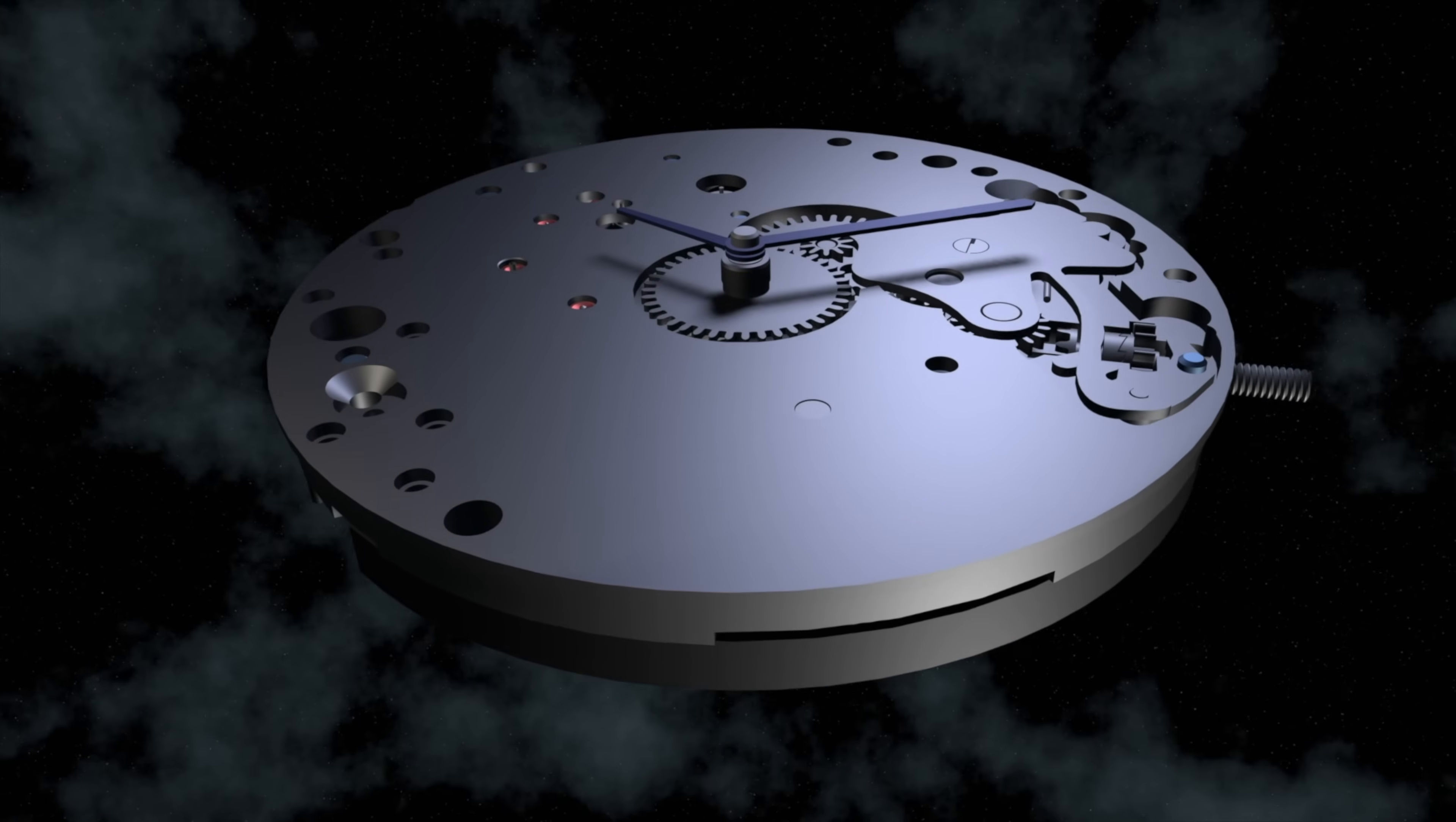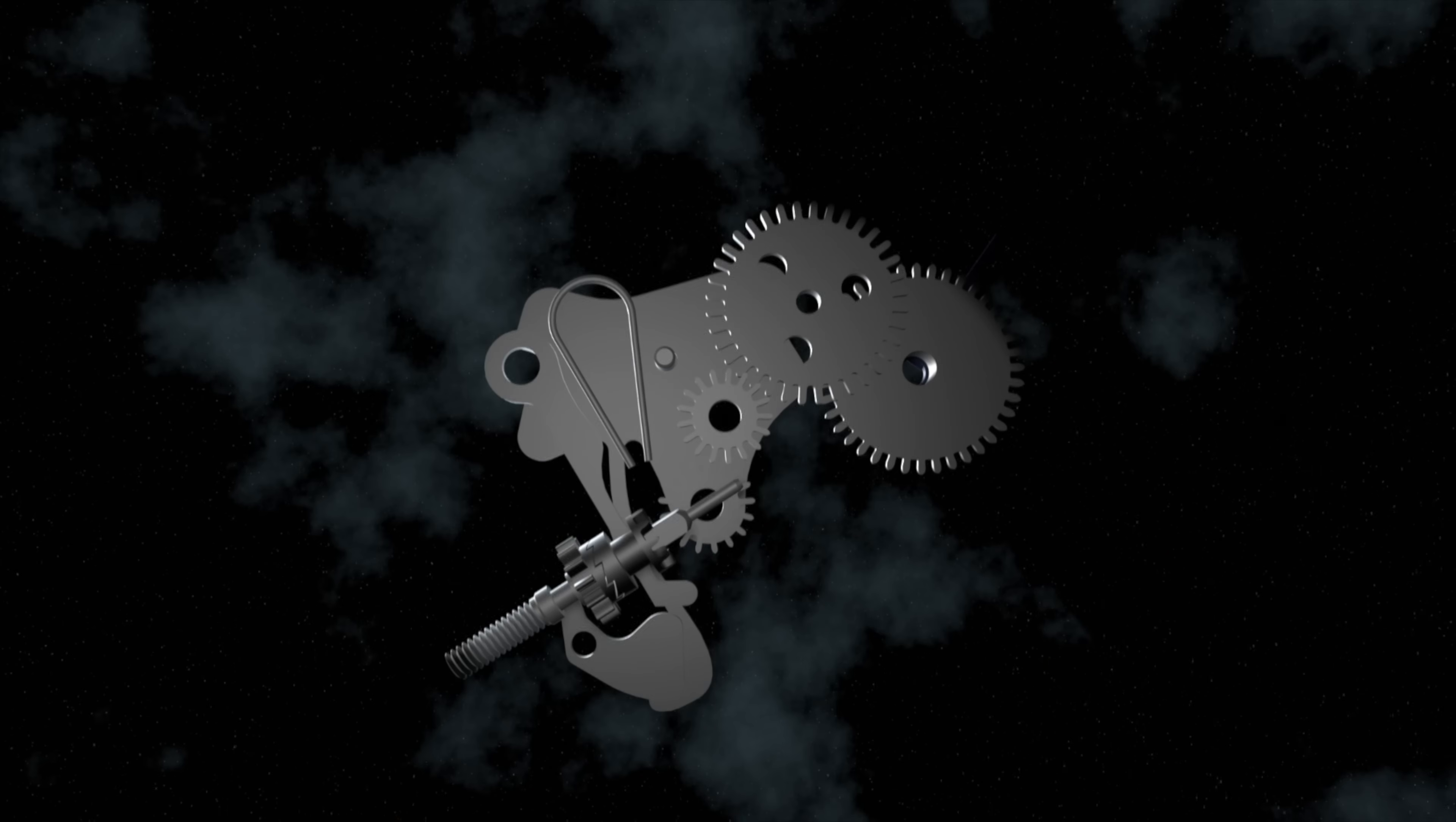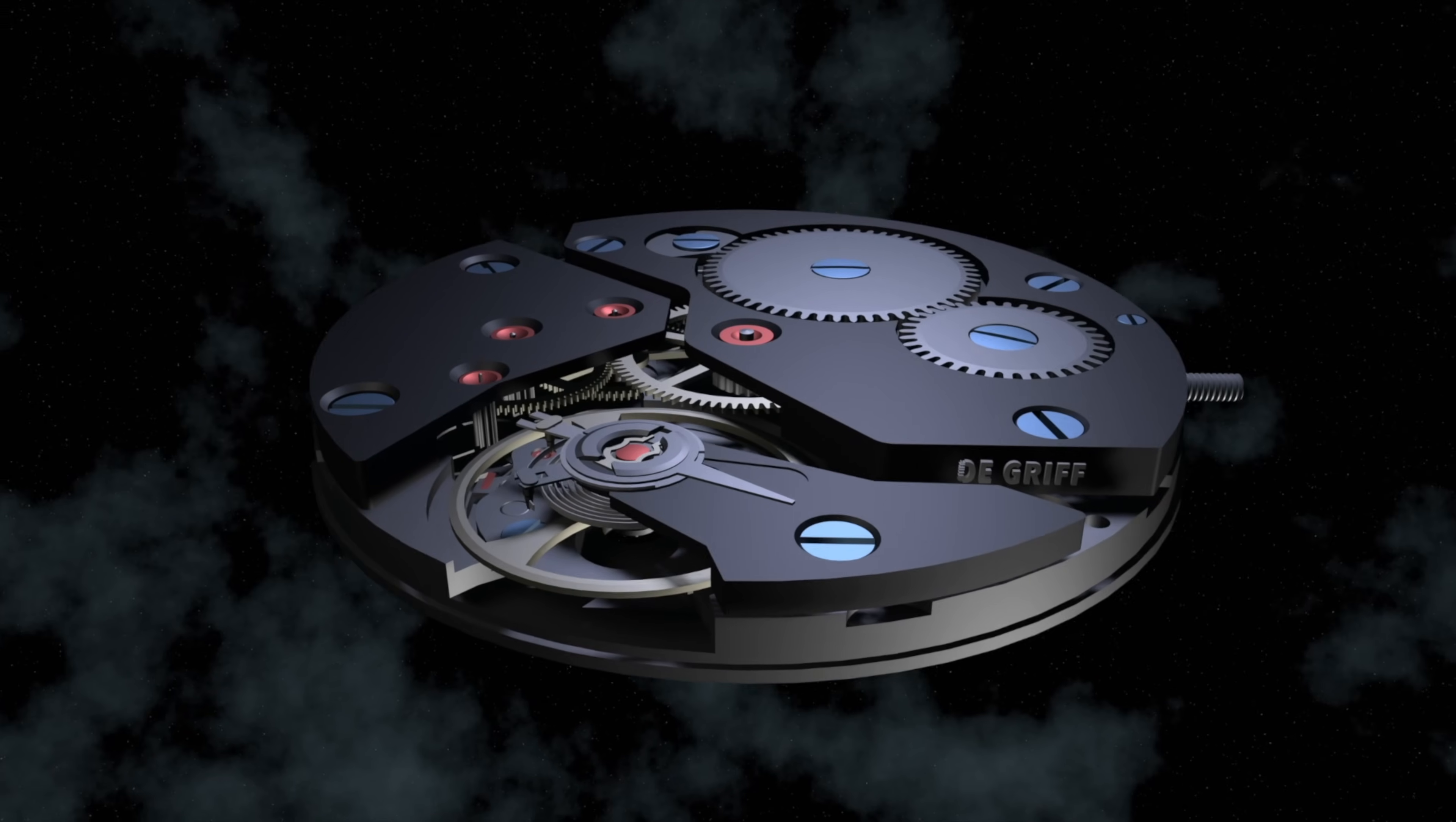Now the motion works then are a set of reduction wheels that turn the hour and minute hands. So the motion works move forward as they interact with the going train, the wheels which move forward at a steady pace thanks to the escapement.